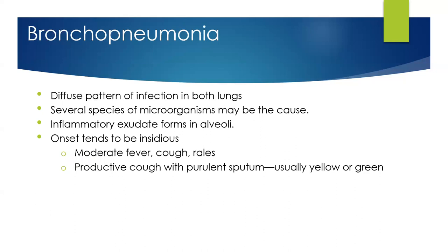Bronchopneumonia, on the other hand, is a more diffuse pattern of infection in both lungs — sometimes called walking pneumonia. It can be caused by several different species of microorganisms. It causes inflammatory exudate that forms in the alveoli. Onset tends to be insidious, slow-going, with moderate fever, cough, and rales. You can get a productive cough with purulent, yellow-green sputum. Patients tend to be less ill, but left untreated it can really progress. It's important to identify it early.